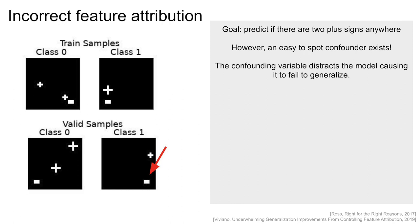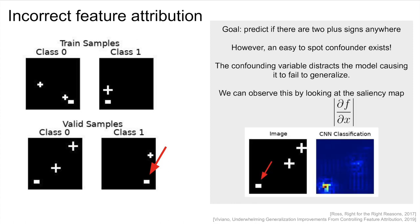When the model is evaluated on the validation data, it will ignore the plus signs and focus on the distractor, causing it to make an erroneous prediction. Because in the validation data, the distractor is reversed from the training data. We can approximate what a model was looking at to make a prediction using a simple saliency map, which is the gradient of each pixel with respect to the output of the network.